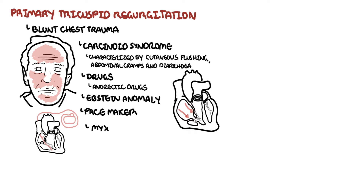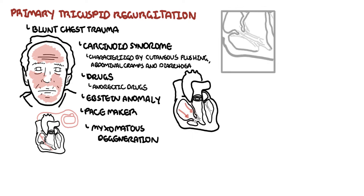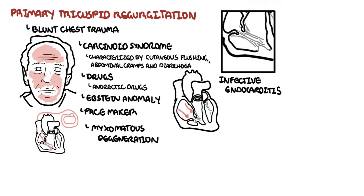Myxomatous degeneration associated with tricuspid valve prolapse occurs in as many as 40% of patients with prolapse of the mitral valve. Valvular abnormalities caused by infective endocarditis in IV drug users involve the presence of vegetation caused by bacteria such as Staphylococcus aureus.